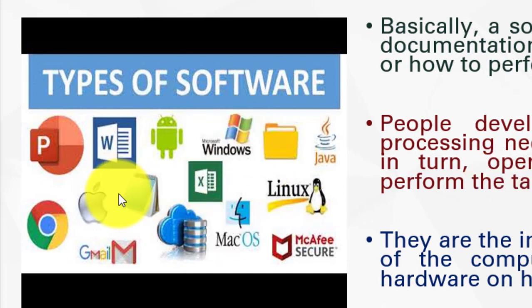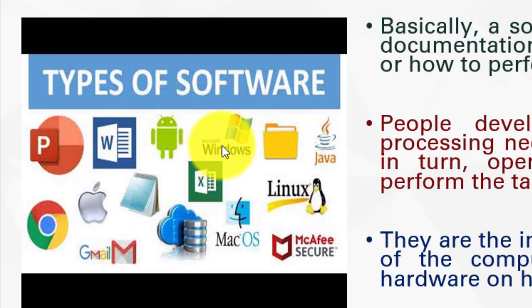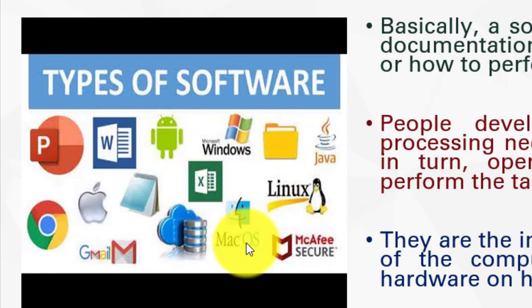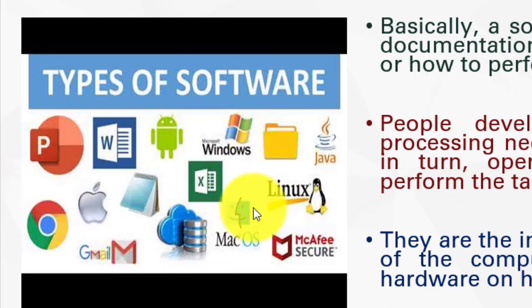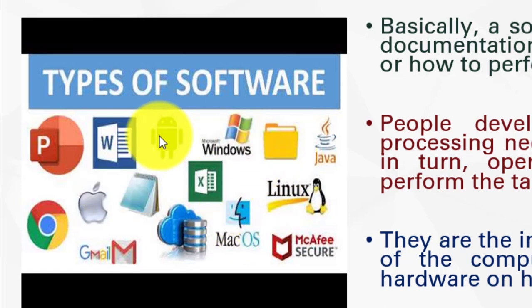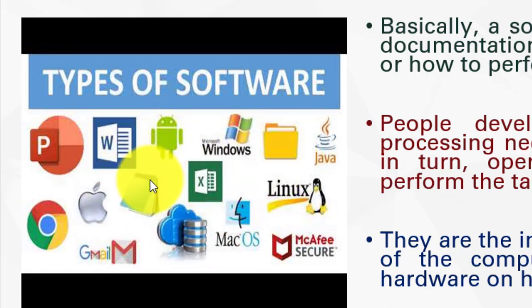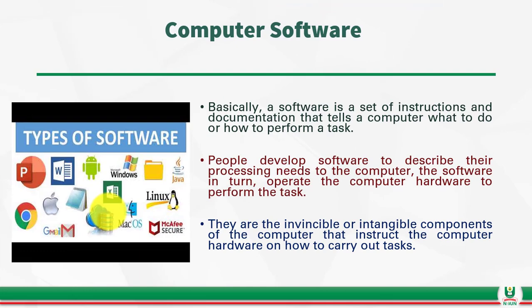If you look here, you will see different types of software — Microsoft Word, Windows, Java, Excel, and some other things. All these software cannot be seen; you don't see them. But you need them for your computer to perform maximally, or for you to be able to use your computer to execute different tasks. These are the computer software and their critical components of computer systems.